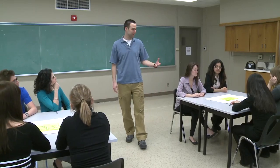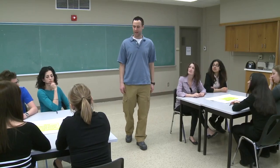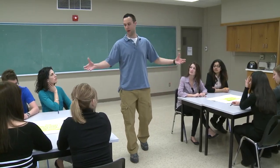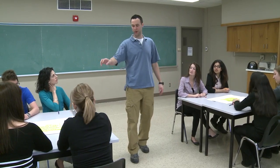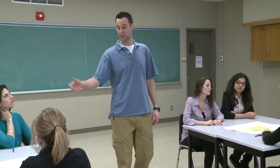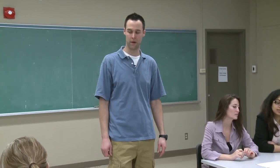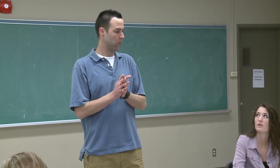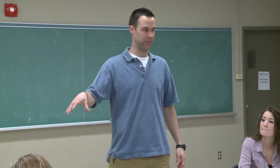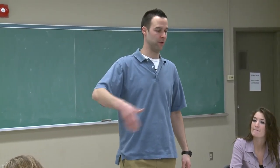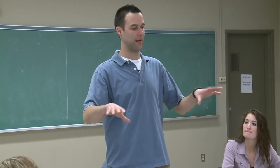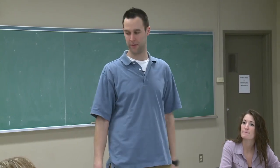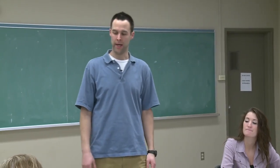This strategy is called placemat. What I've done is given every group a large sheet of paper with our topic in the middle — that's the heart of our discussion today. Our discussion topic is factors that influence attitudes towards alcohol, tobacco, and other drugs. You want to divide up your sheet — since there's four of you — into four sections, so everybody has an opportunity to write equally.